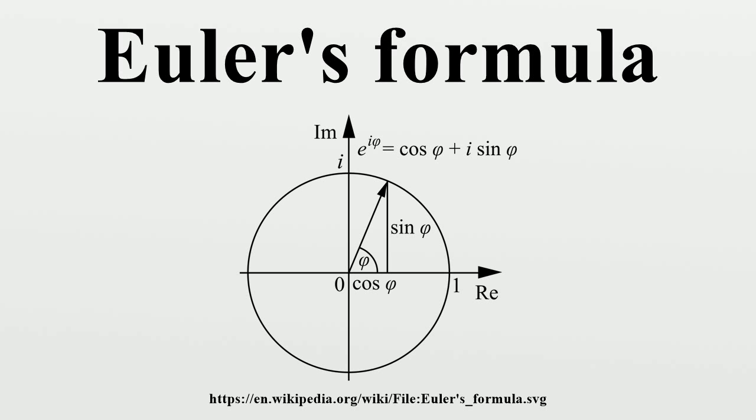Meanwhile, Roger Coates in 1714 discovered a related result. Coates missed the fact that a complex logarithm can have infinitely many values, differing by multiples of 2πi, due to the periodicity of the trigonometric functions.